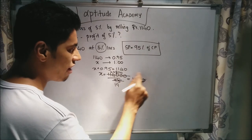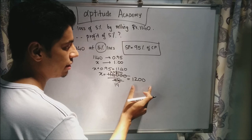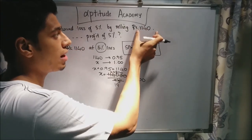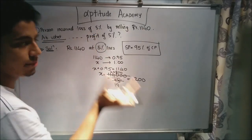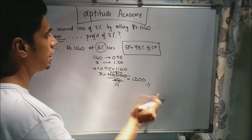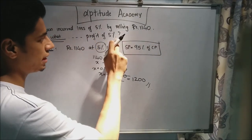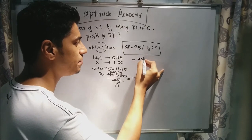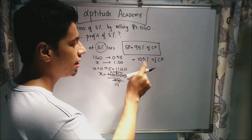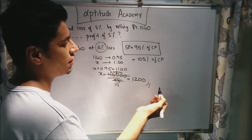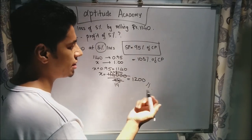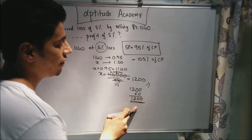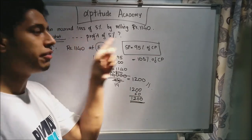So he bought the product at 1,200 rupees and sold it at 1,140 rupees — that's how he got a 5% loss. Now you have your cost price; half the problem is done. At what price should he sell to get a profit of 5%? For 5% profit, he has to sell at 105% of the cost price. 5% of 1,200 is 60 rupees. So add 60 to 1,200 — that gives 1,260. If he sells the product at 1,260 rupees, he will get a profit of 5%.